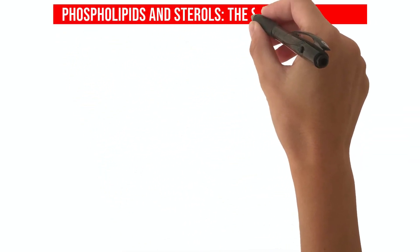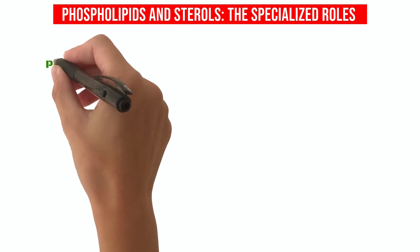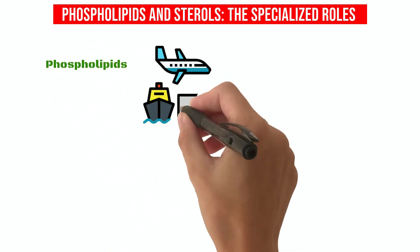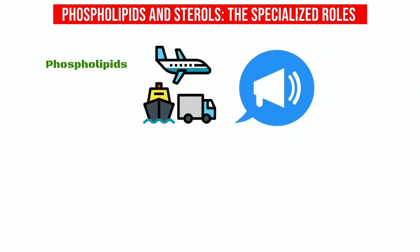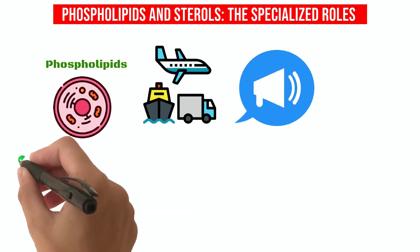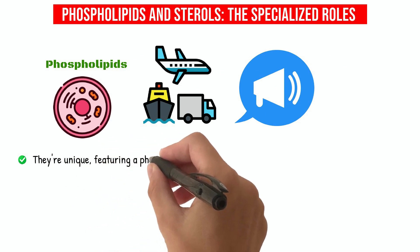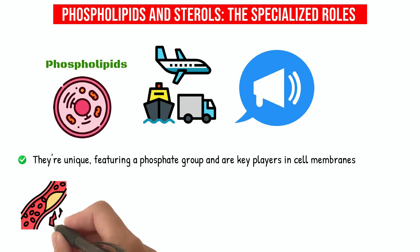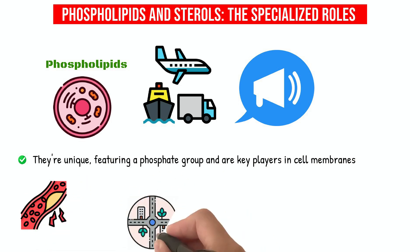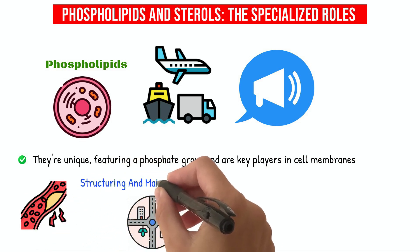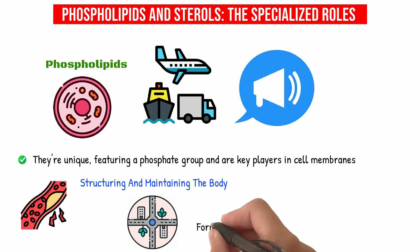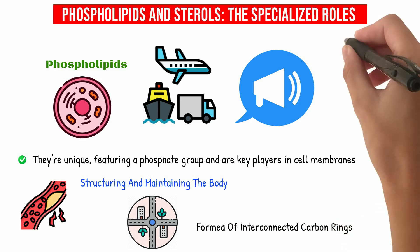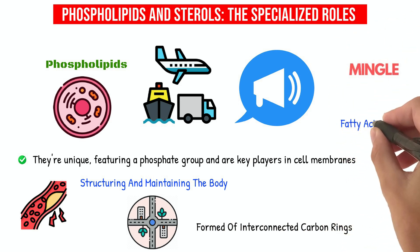Phospholipids and sterols — the specialized roles. Phospholipids, another lipid type, are like the body's diplomats, helping with transportation and communication between cells. They're unique, featuring a phosphate group, and are key players in cell membranes. Sterols, especially cholesterol, are more like the city planners, involved in structuring and maintaining the body. Unlike other lipids, they're ringmasters — formed of interconnected carbon rings — and don't mingle with fatty acid chains.